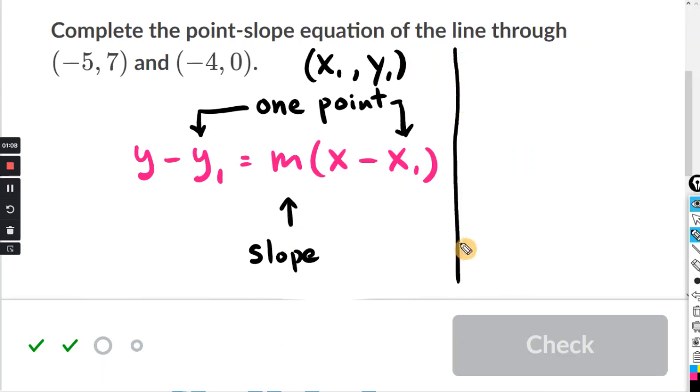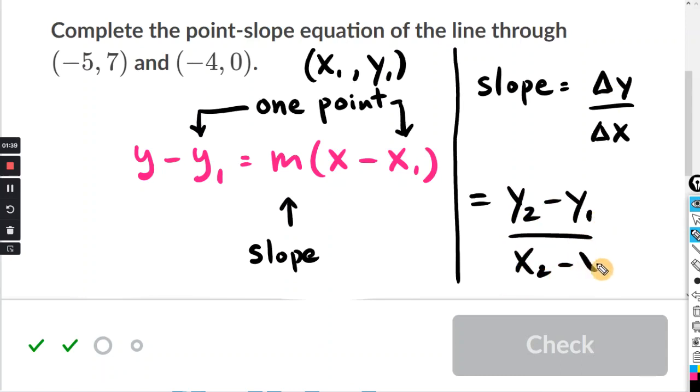And in case you don't recall, the formula for the slope is just a change in y over the change in x. That triangle is a Greek letter delta. So that just means change in y over change in x. If you want to expand this, you can say y2 minus y1 divided by x2 minus x1. That's the slope formula.